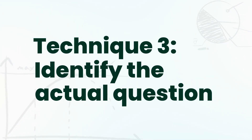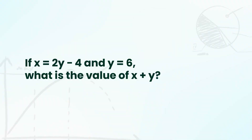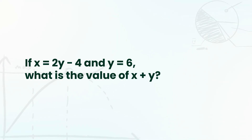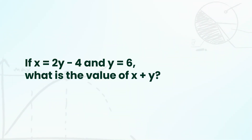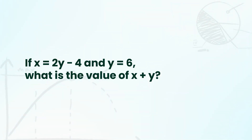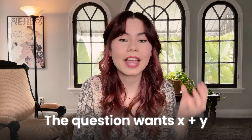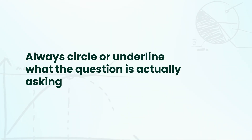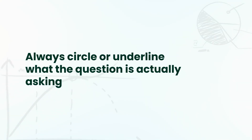Technique number three: identify the actual question. The SAT loves to mislead students who rush. For example, if a question asks: if x equals 2y minus 4 and y equals 6, what is the value of x plus y? A lot of students might just plug in y and solve for x, but the question is asking about x plus y. Always circle or underline what the question is actually asking before you start solving anything.